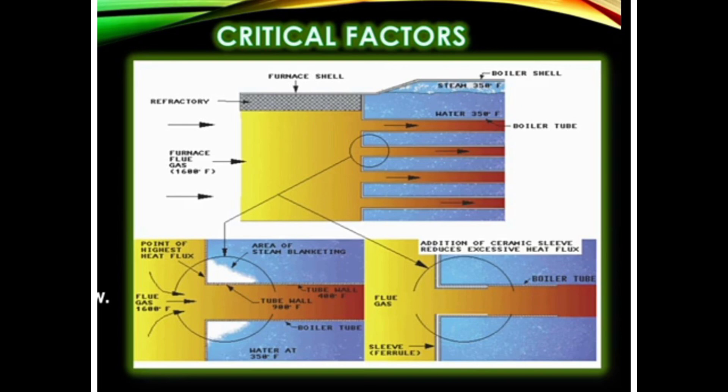One important distinction: steam generating from the surface of the boiler drum where we maintain the level is called normal evaporation. However, steam generating at any corner or part of the boiler tubes is abnormal and is caused by steam blanketing — this is called abnormal evaporation. That concludes today's topic on steam blanketing.